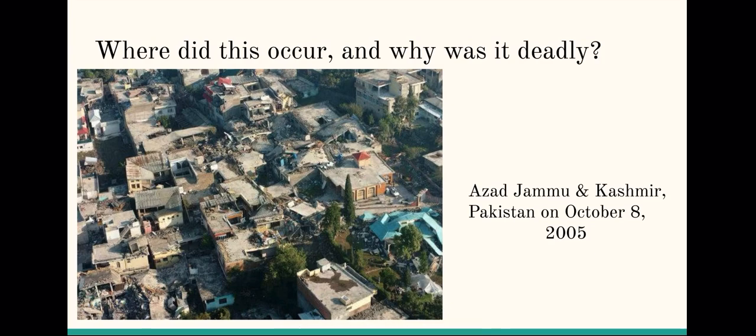The earthquake's devastation occurred on the subcontinent of Southeast Asia, in Azad Kashmir. Its tremors were felt within the entire country of Pakistan, along with Nepal, Afghanistan, Bangladesh, and some parts of India. Kashmir is located on the Indian and Eurasian tectonic plates. It was the deadliest earthquake to ever hit the region, leaving families homeless and a staggering number of casualties.